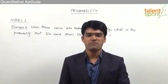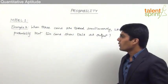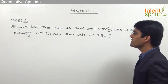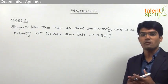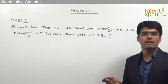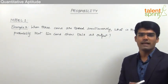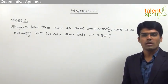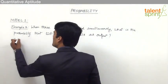Let us now take the second example from Model 1, which is based on tossing three coins simultaneously. When three coins are tossed simultaneously, what is the probability that two coins show tails as the output? We need to find the probability that out of three coins, exactly two show tails — which means the third coin must show heads. We first need to determine the sample space.